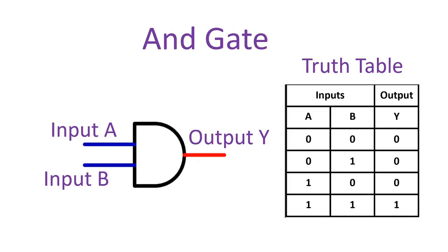If we are going to look here on the truth table, input A is 0, input B is 0, output is 0. Input A is 0, input B is 1, output is 0. Input A is 1, input B is 0, output is 0. Input A is 1, input B is 1, output is 1.